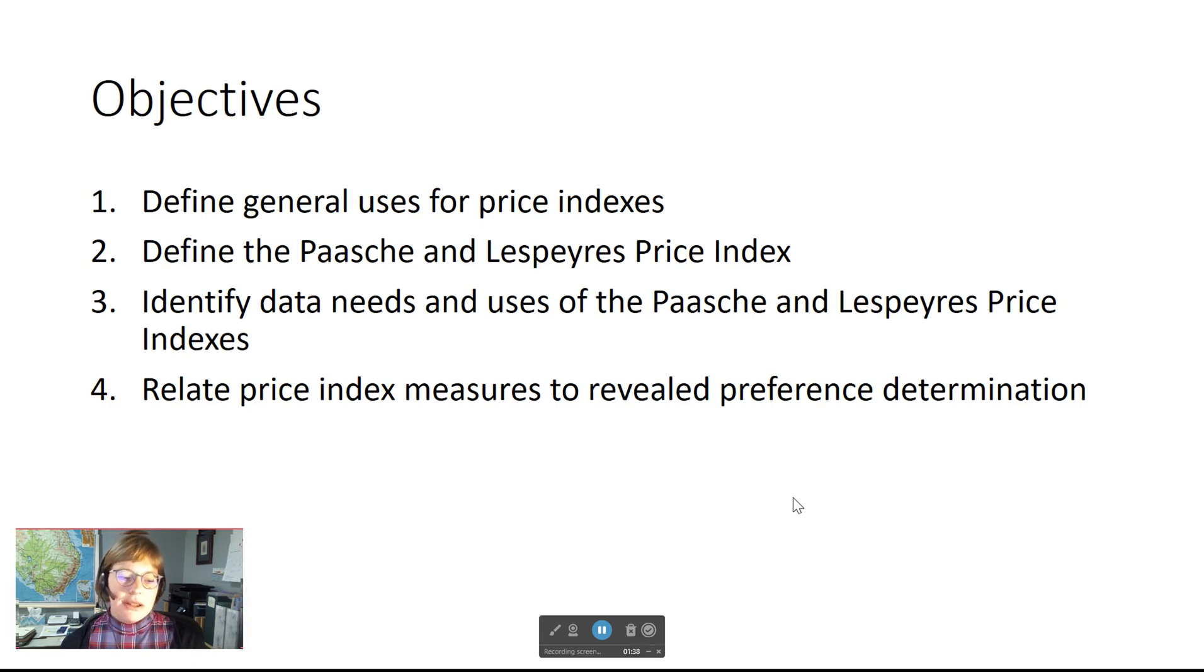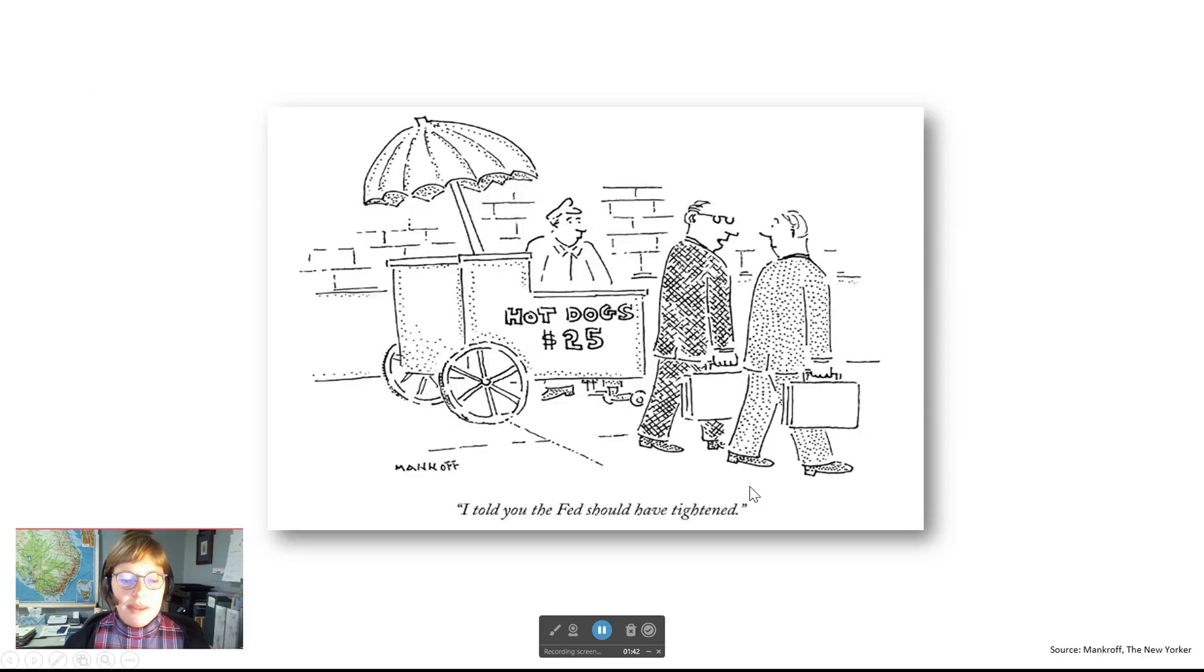Price indexes allow us to look at shifts in prices across time and determine whether bundles of goods are more or less affordable over time. This may aid governments as they develop policies with regards to minimum wages, taxation, and subsidies for certain goods.